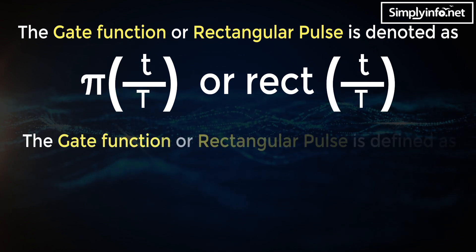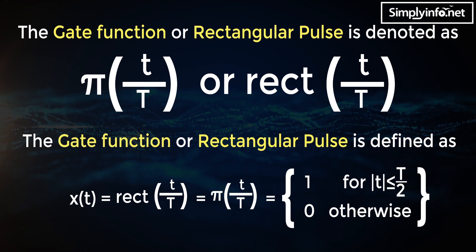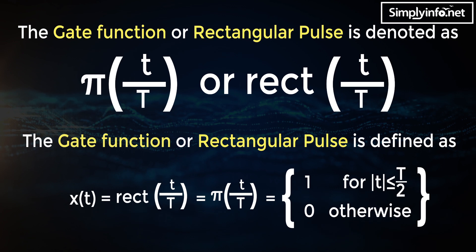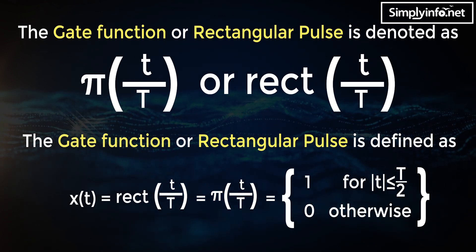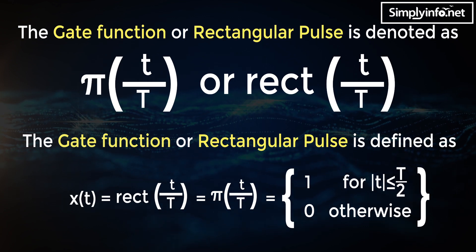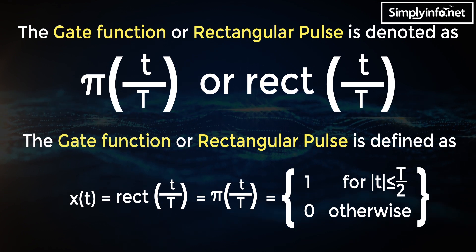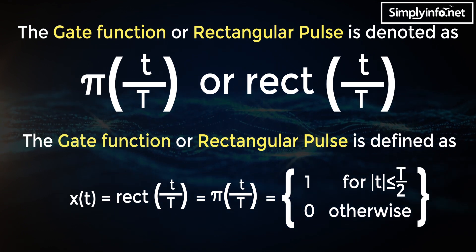The gate function or rectangular pulse is defined as x(t) = rect(t/τ) = π(t/τ) = 1 for |t| less than or equal to τ/2, and equals 0 otherwise.